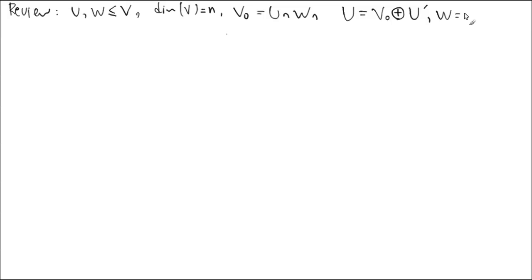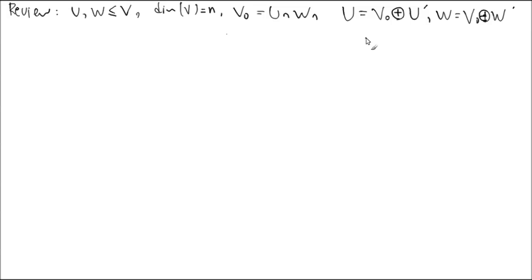And w is v0 plus u prime, and also w prime. So you know the sum. What condition makes this a direct sum between these two things? What condition allows the sum to be a direct sum? Intersection being trivial.